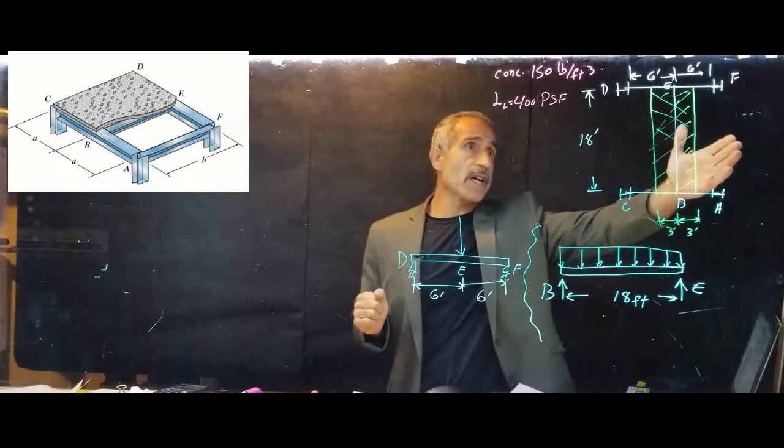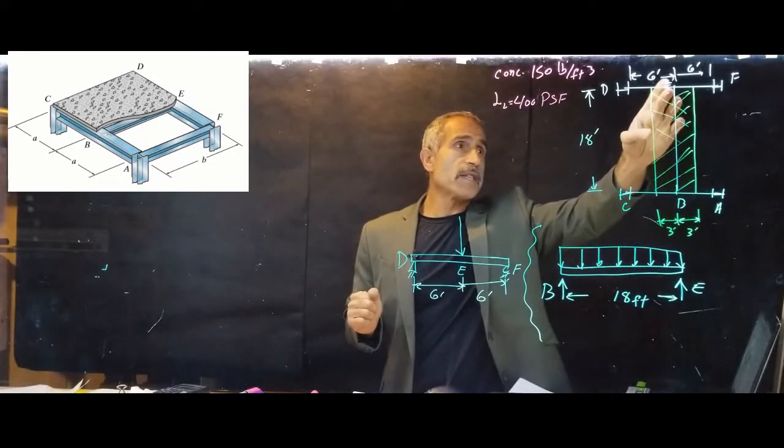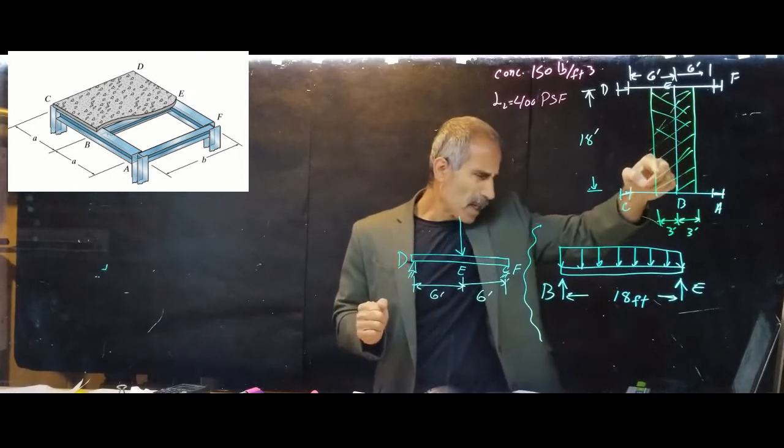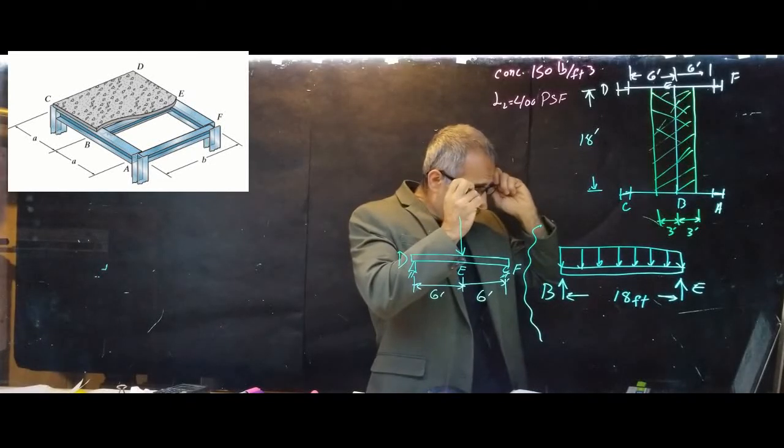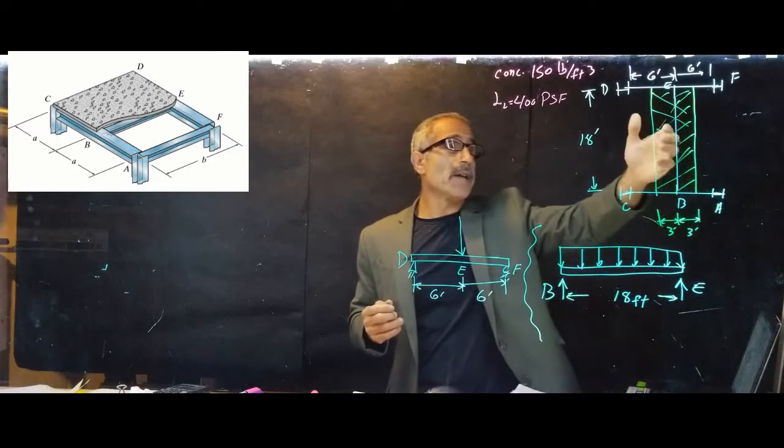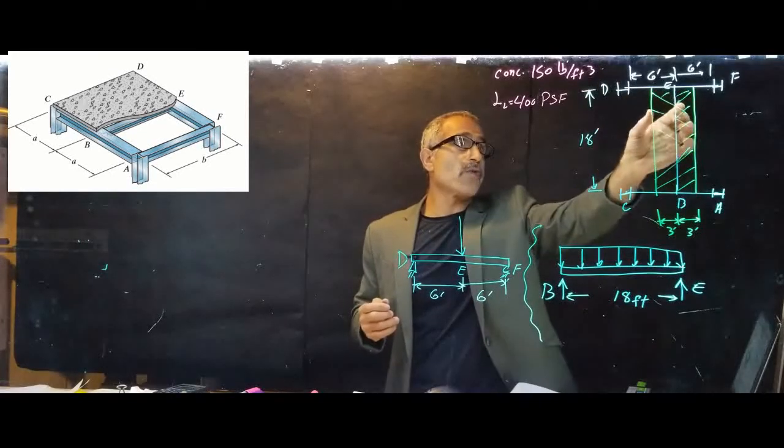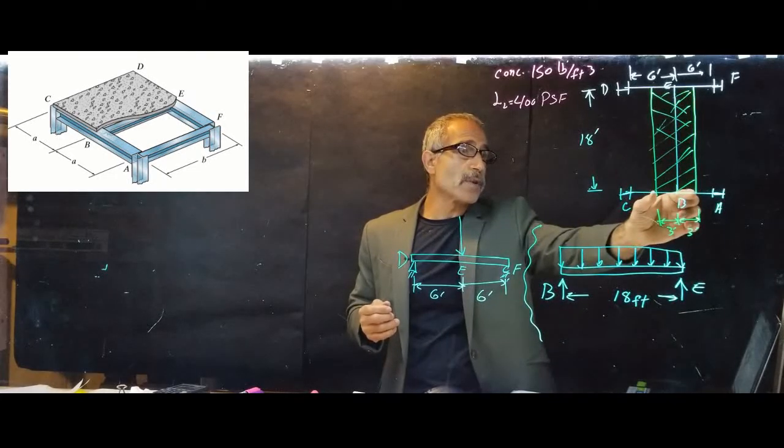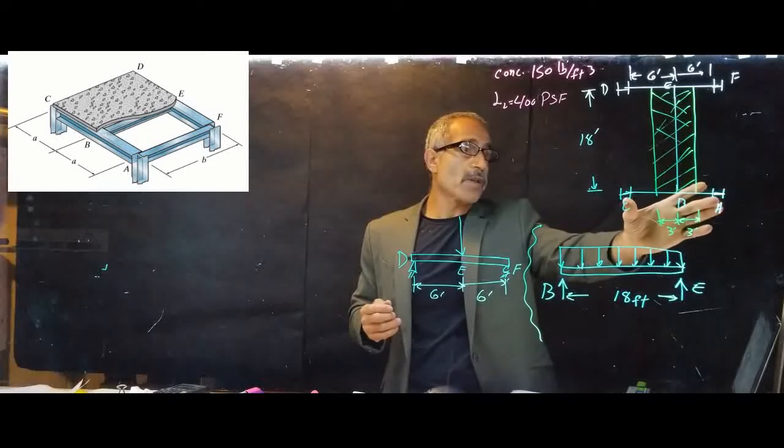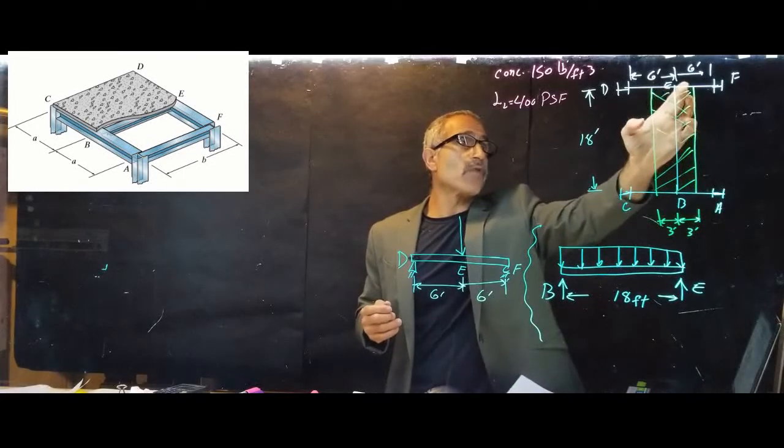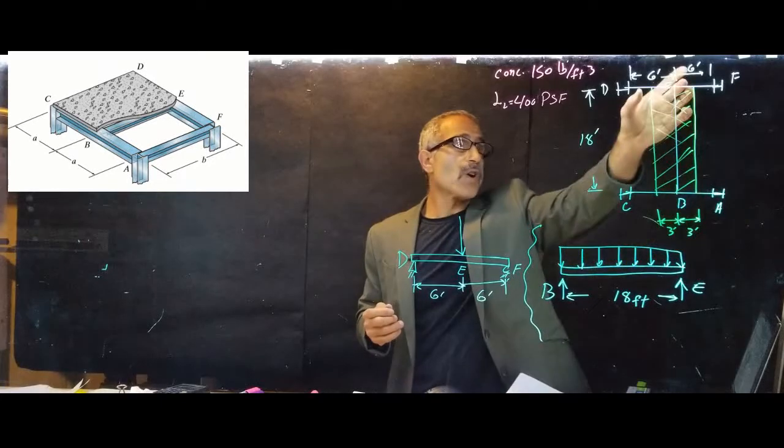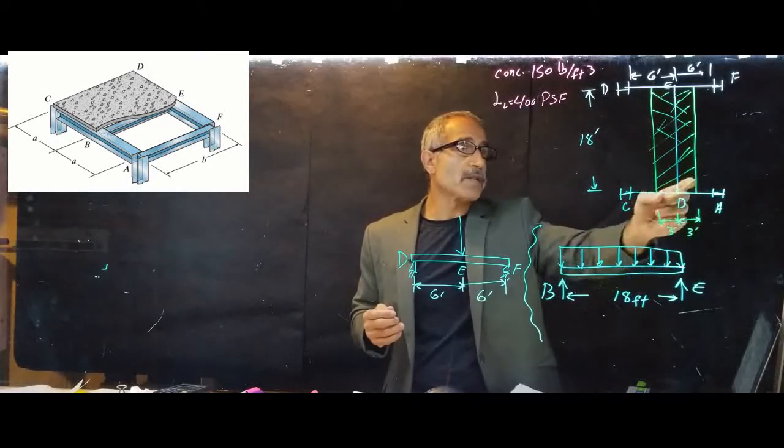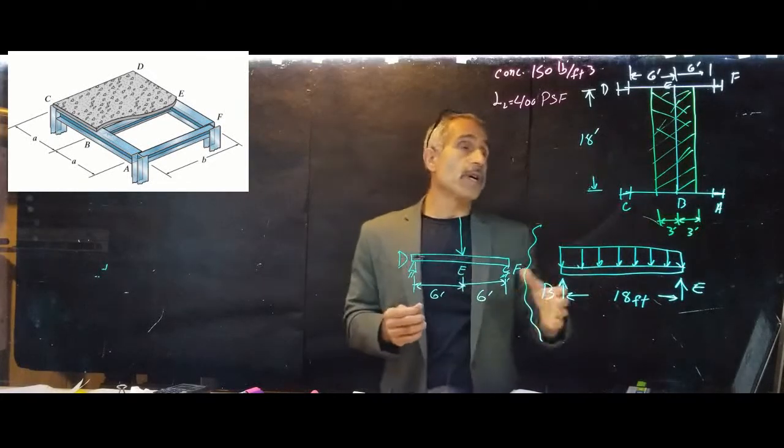When we do the tributary load, we can just do halfway each way. So halfway between each beam. The way that this beam EB carries is halfway between beam EB and AF on this side and also CH on this side. It's halfway, and that's why we're going to say this beam carries the load from this tributary area. Because the whole thing was six feet from here to here, halfway will be three feet. So our rectangular box is going to have a width of six feet, or three feet on each side of the beam.